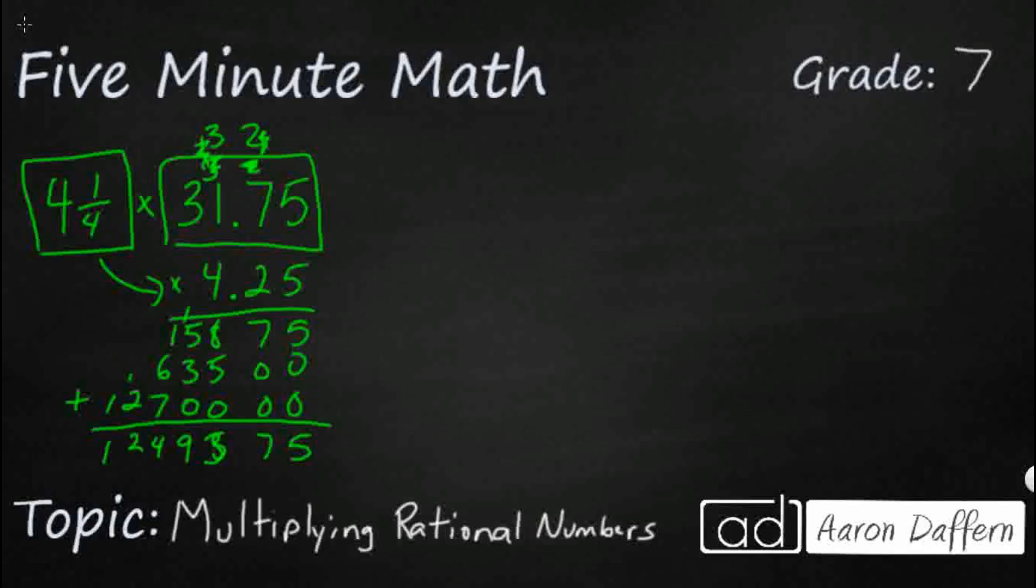So that is going to be 13. And I've got 1, 2, 3, 4 digits behind the decimal in my factors. So I need 1, 2, 3, 4 digits behind my decimal in my answer, in my product here.